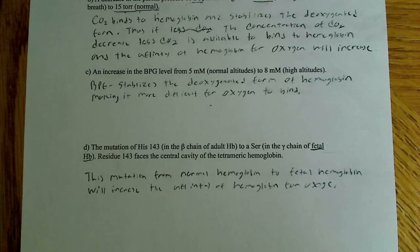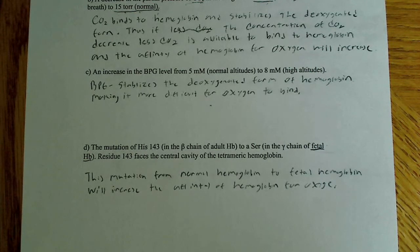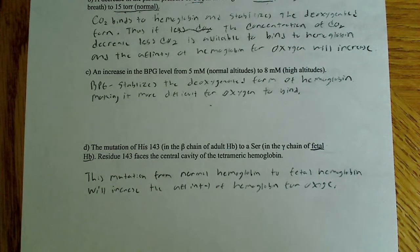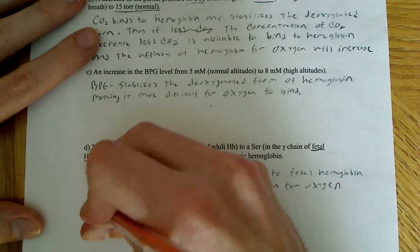It comes down to a simple premise: a fetus must take oxygen from its mother's blood. In order to take this oxygen from the mother, the hemoglobin must have a higher affinity for oxygen than the mother's hemoglobin.